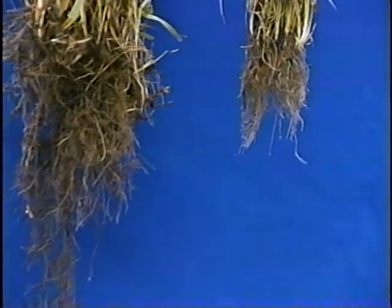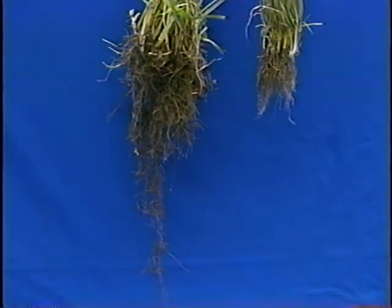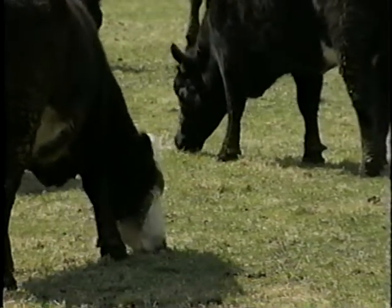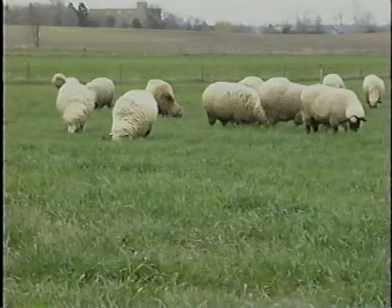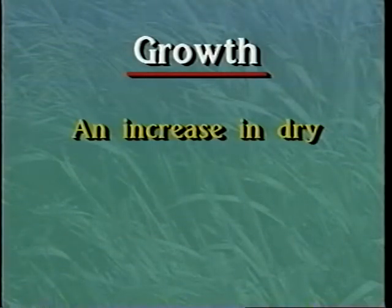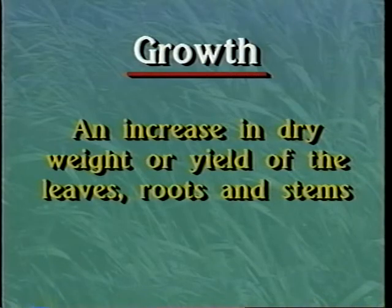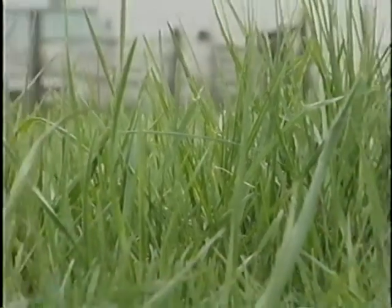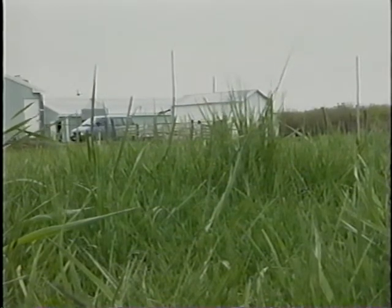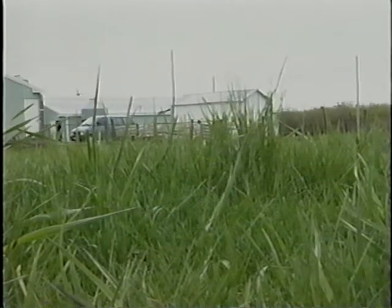Plants absorb most of their mineral and water requirements through their root system. Plants with a large root system can efficiently absorb nutrients and water. However, plants with a limited root system have difficulty absorbing enough nutrients or water even if they are abundant in the soil. Excessive leaf area removal by grazing greatly restricts the ability of the plant to support a root system. Maintaining a moderate to high level of leaf area will maintain a deeper and more vigorous root system. Growth can be defined as an increase in dry weight or yield, most often of the leaves, roots, and stems. If leaf area and photosynthesis is lacking, growth occurs very slowly. Rapid growth and regrowth of pasture plants occurs only if the plants have good leaf area or good levels of accumulated carbohydrates.